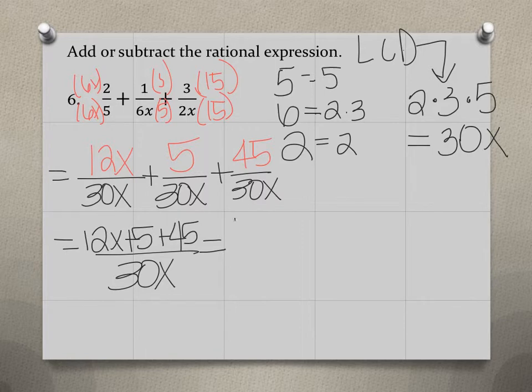So if we simplify the top, that gives us 12x plus 50 divided by 30x.